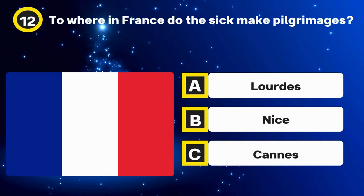Question 14. Christopher Cockerell invented what? Options: Hovercraft, Jet engine, Wind turbine. The answer: Hovercraft.